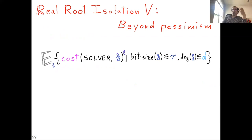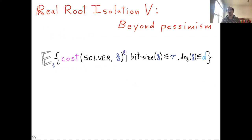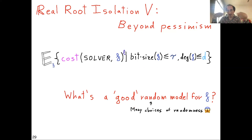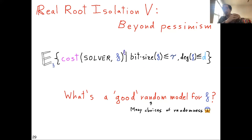Here's the spoiler: the reason for this practical performance is that Descartes is almost optimal on average. Instead of the worst-case complexity, we look at the expected cost over a probabilistic model — the expected runtime of the solver. The hard part is: what is a good random model for f? There are many ways to choose a random integer polynomial, and you have to be careful not to trivially choose the worst polynomial with probability one — that is technically a random polynomial, but it's cheating.